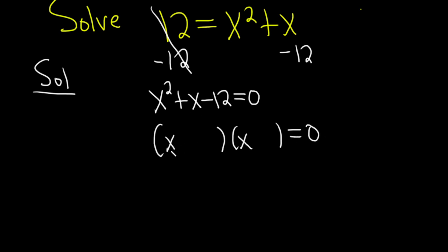x times x is x squared, so that's good. We need two numbers that multiply to negative 12 and add to 1. So 4 and 3.